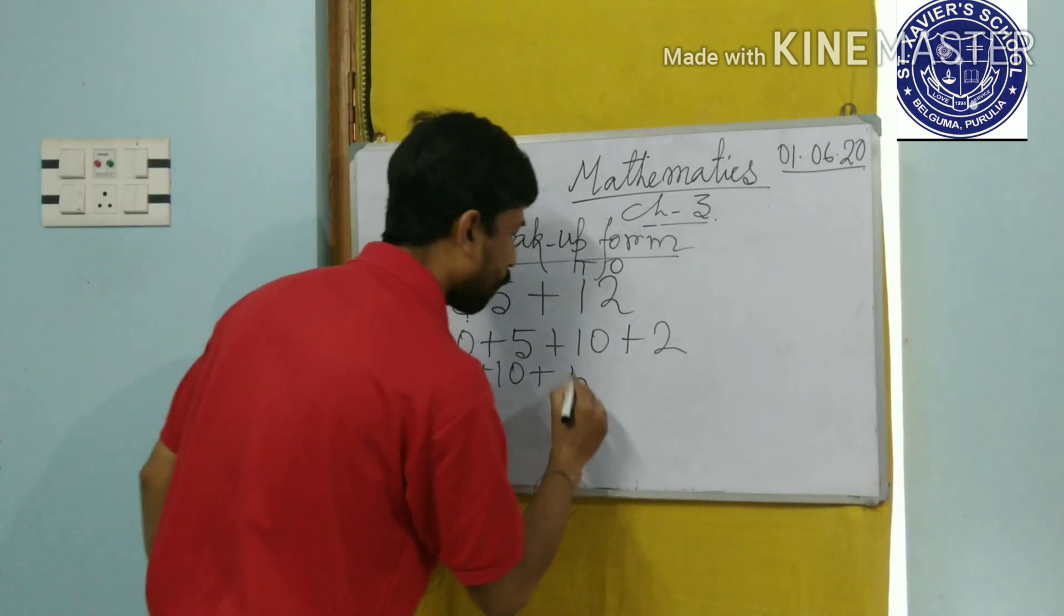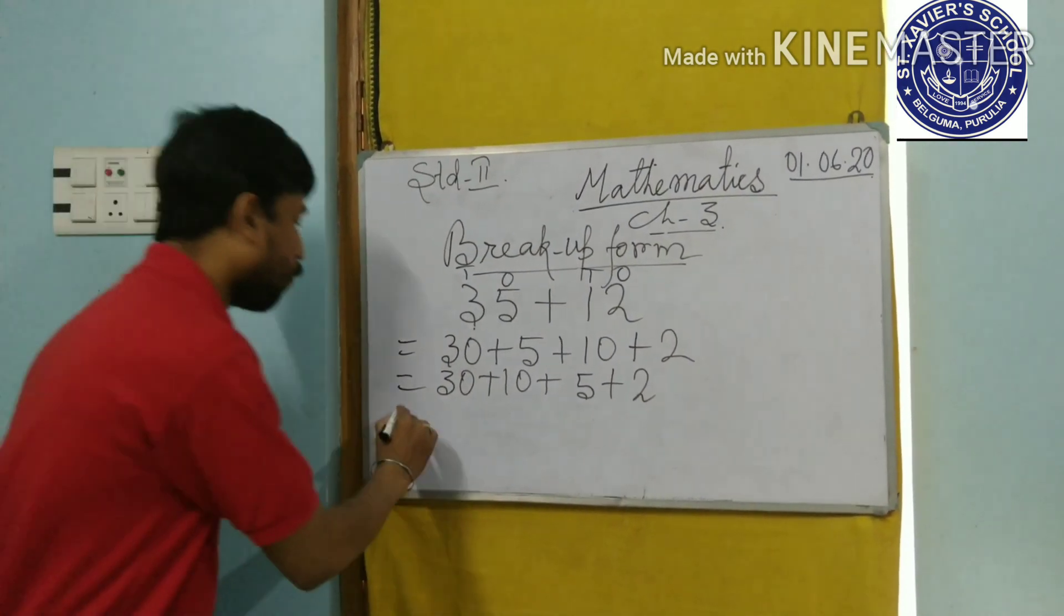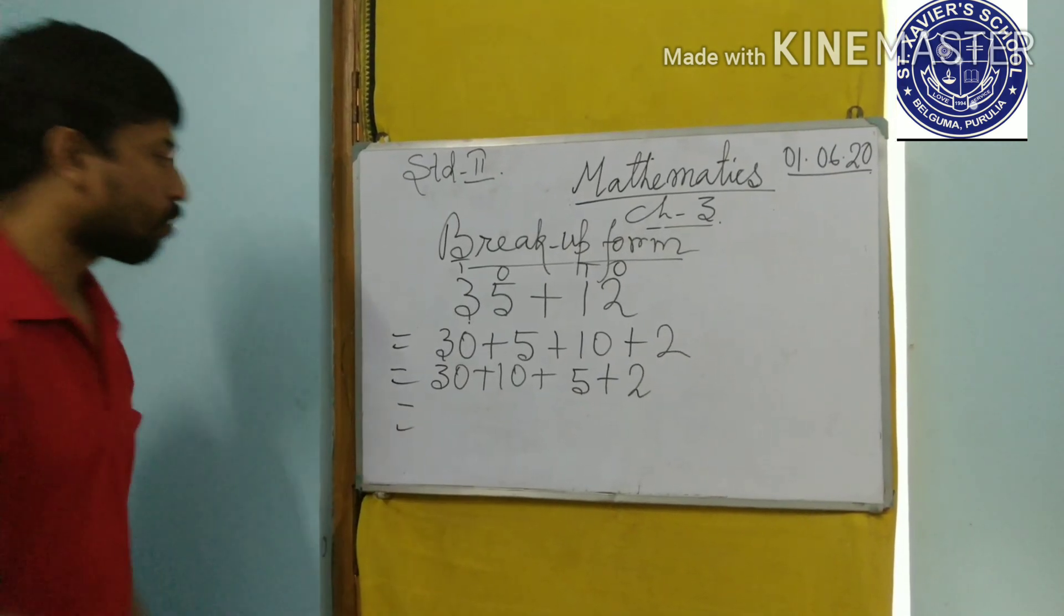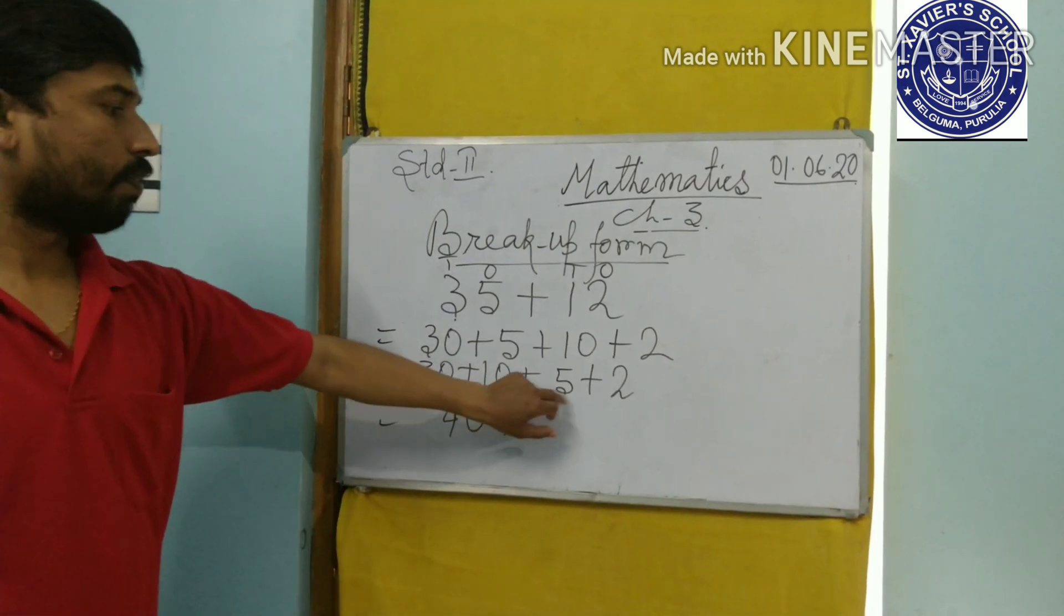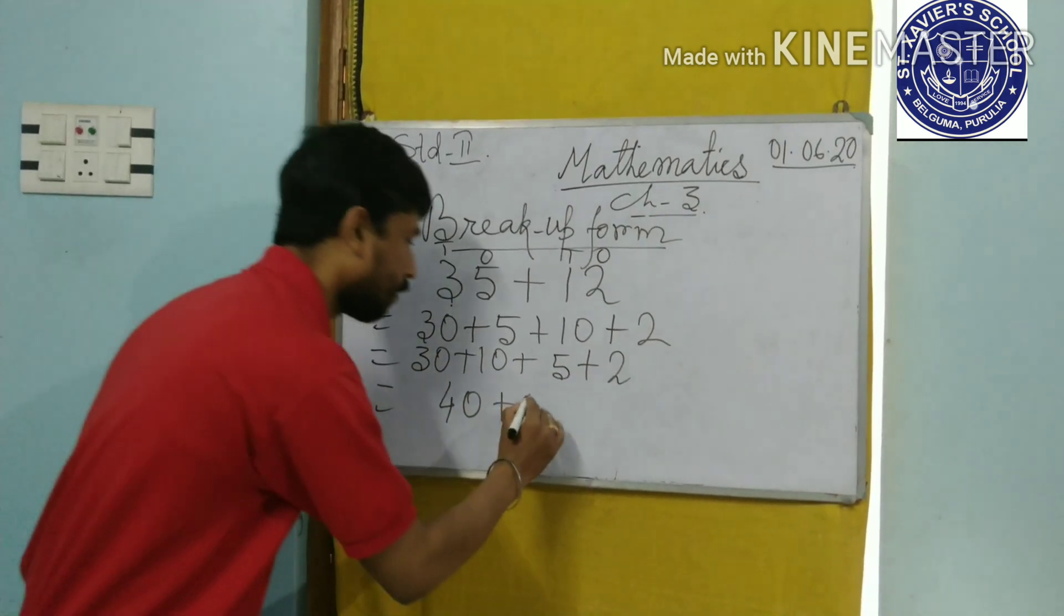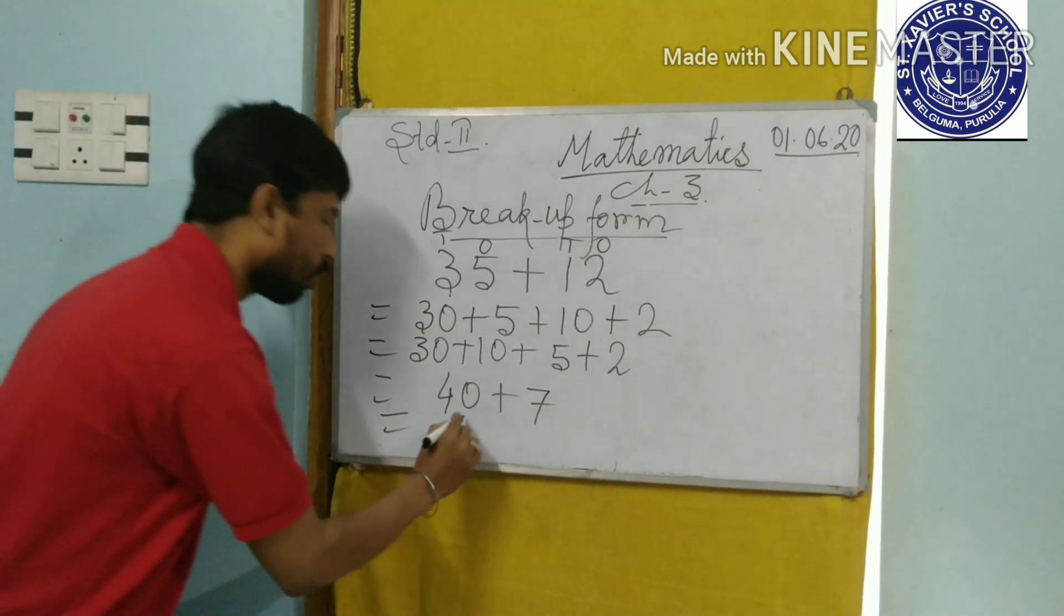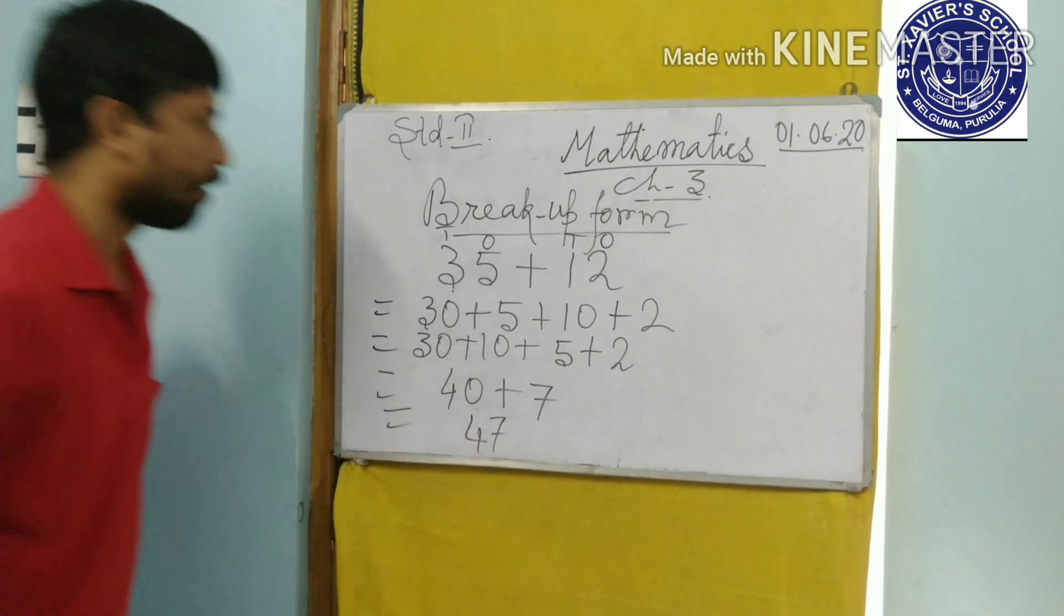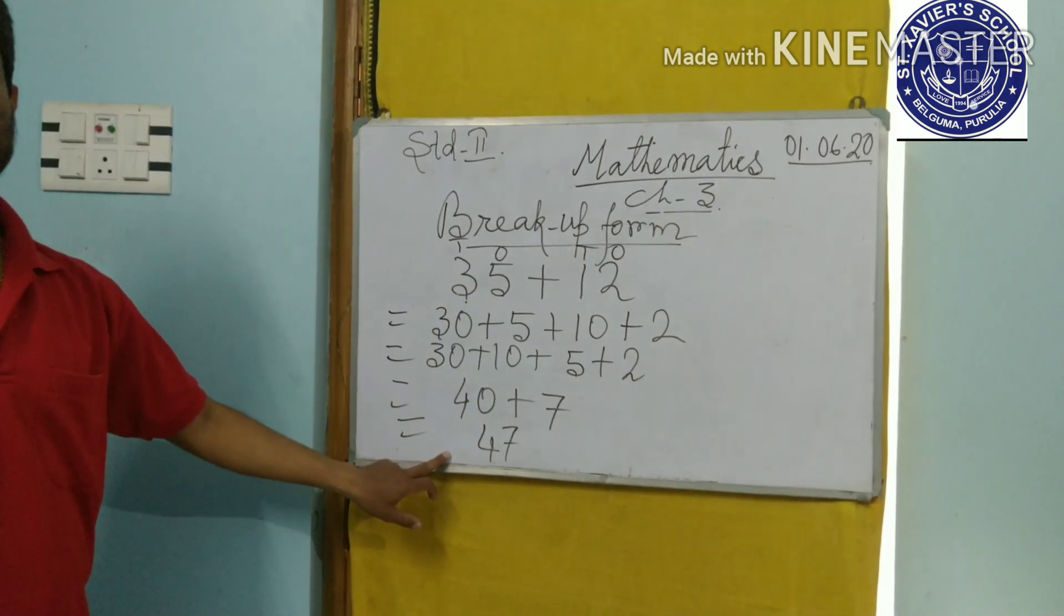5 plus 2. So what will be the addition? 30 plus 10 means 40. And 1's place, 5 plus 2 means 7. So what is the total addition you are getting? 47. So look, 35 plus 12 gets 47.